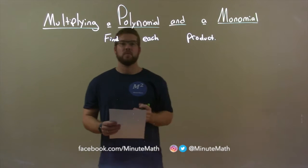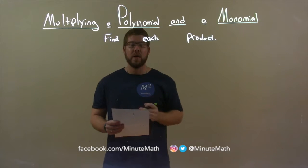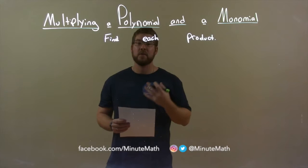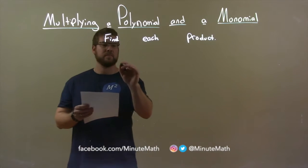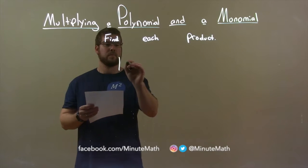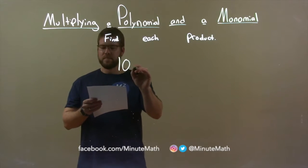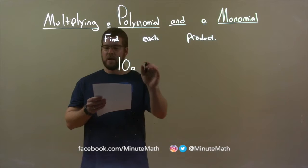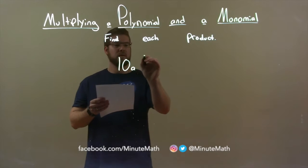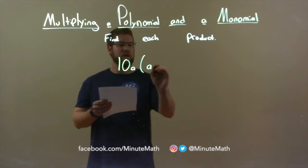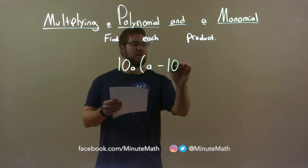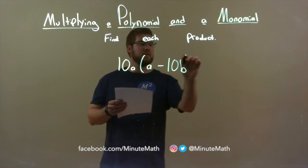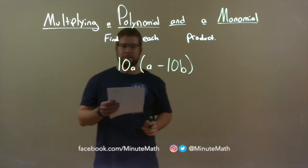We're finding each product. If I was given this product: 10a times (a minus 10b).